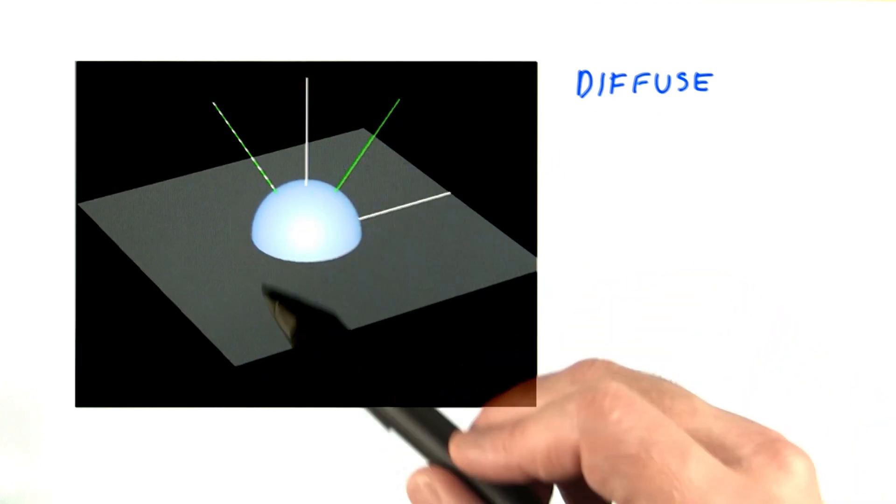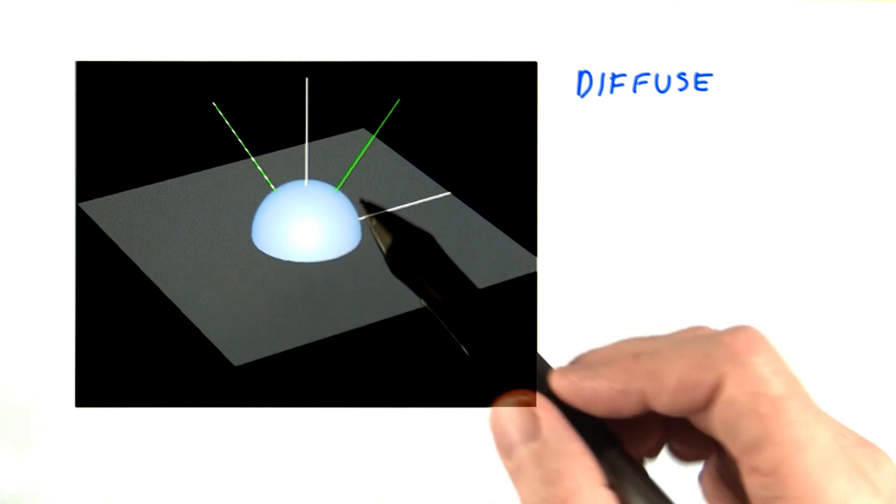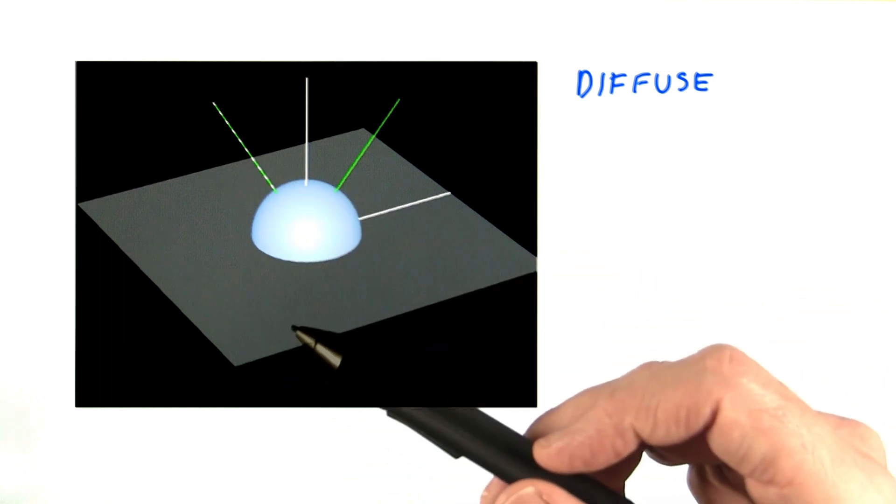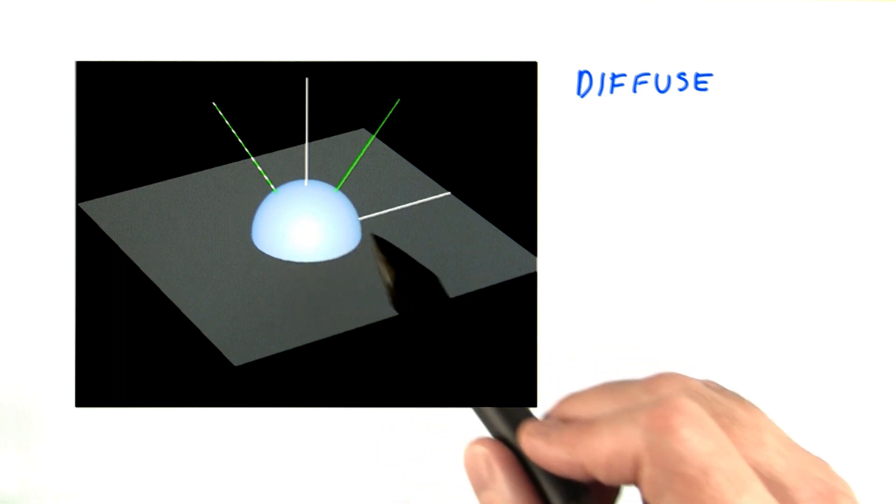Another basic distribution is diffuse reflection. For some given incoming light direction, the direction to the eye doesn't matter. That's the definition of diffuse reflection. Since this value is constant, diffuse is represented by the surface of a hemisphere.